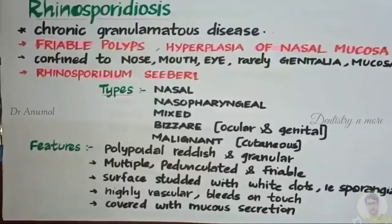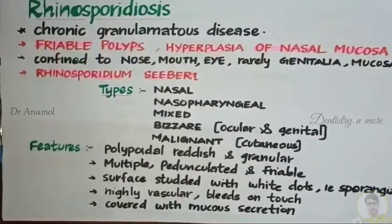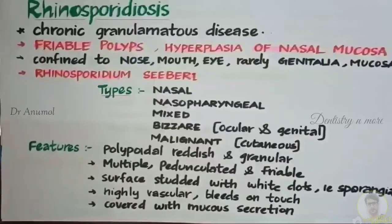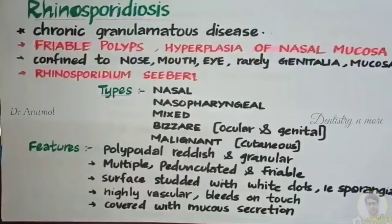Moving on to the types of Rhinosporidiasis. There are five major types: nasal, nasopharyngeal, mixed, bizarre, and malignant type.